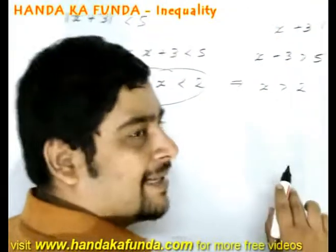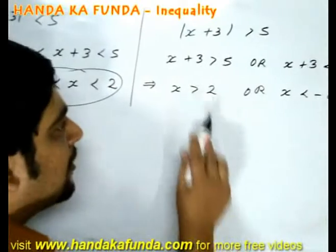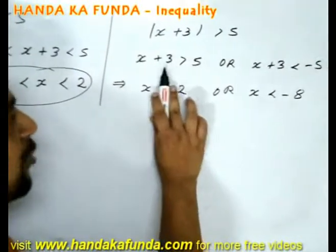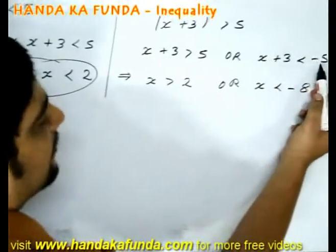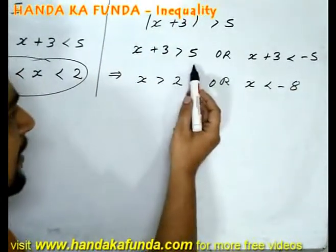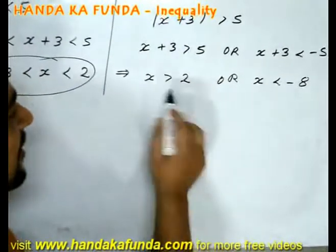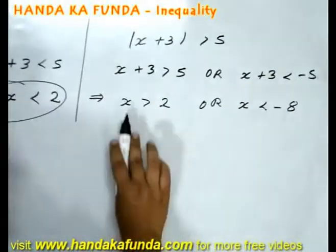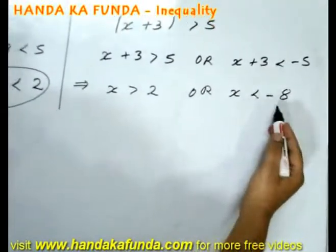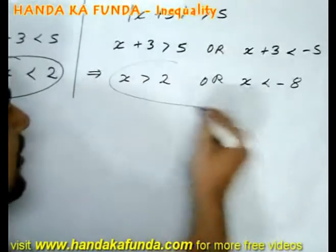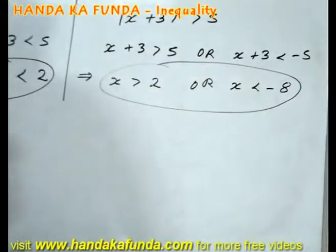However, if it is mod of (x plus 3) greater than 5, I must consider two cases: either the positive value is greater than plus 5, or the negative value is less than minus 5. That is, x plus 3 greater than 5, or x plus 3 less than minus 5. In the first case, x is greater than 2; in the second case, x is less than minus 8. This is the solution when mod of (x plus 3) is greater than 5.